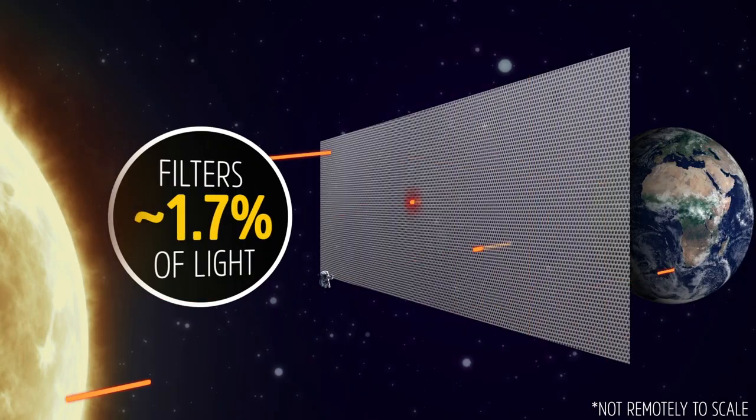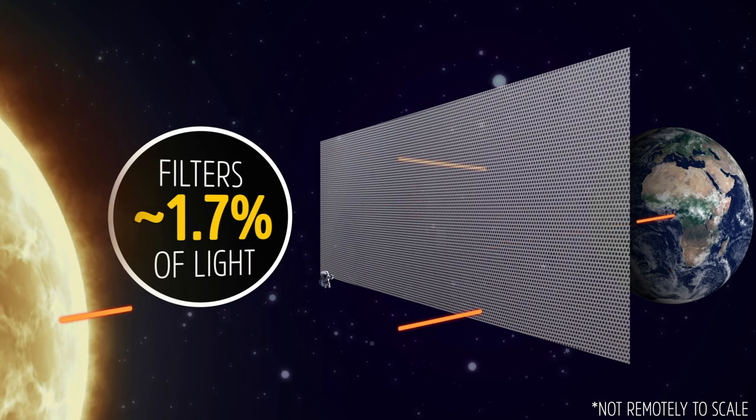In one of the better-known proposals, a mesh made of tightly packed, incredibly fine aluminum threads would be placed up into orbit and would filter out a tiny portion of the Sun's light.